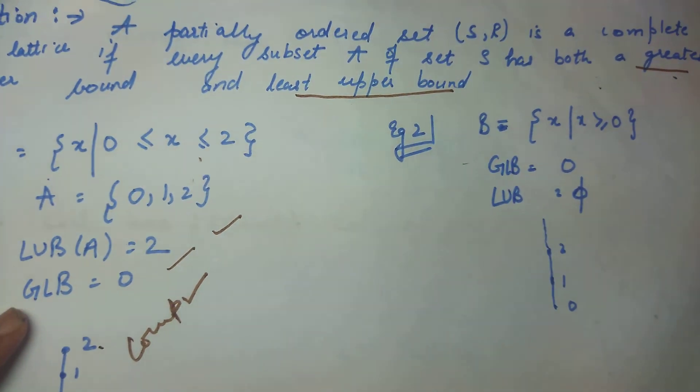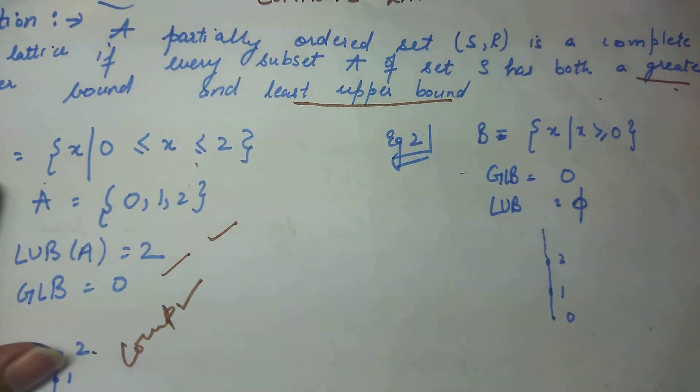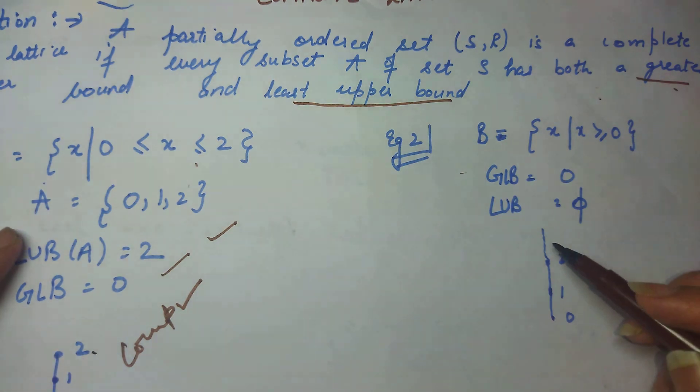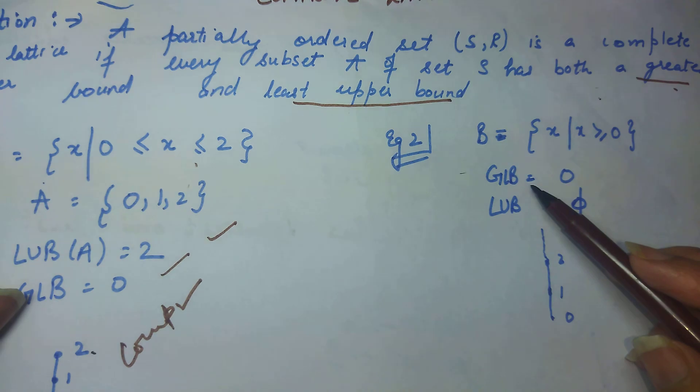Now if we look at the next example: x is greater than 0. I mean this is infinite lattice which I have told you in the last video. So this is infinite lattice. Now see here is the greatest lower bound.